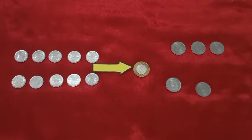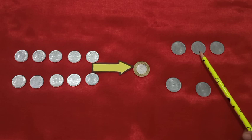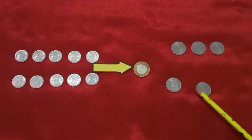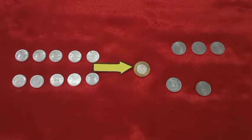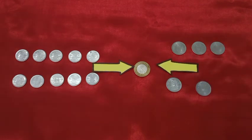So students, how many 2 rupee coins have we taken? It's 1, 2, 3, 4, 5. So dear students, the value of 5 two-rupee coins is equal to 1 ten-rupee coin.